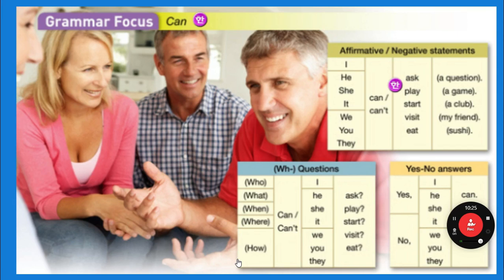Practice doing a couple of those sentences — they're probably going to be on the test. What can I ask? I can ask a question. What can she play? She can play a game. What can we start? We can start a club. A club is a group of people that meet together because they have a common interest, like gaming or playing in a band. When can we visit? We can visit my friend.